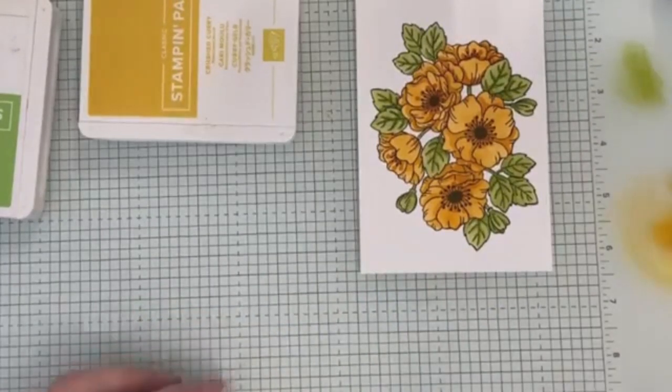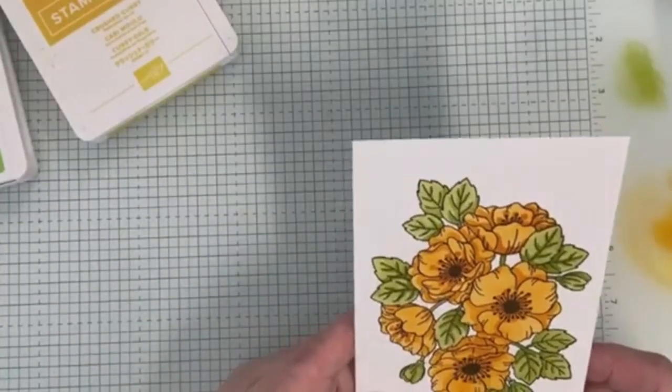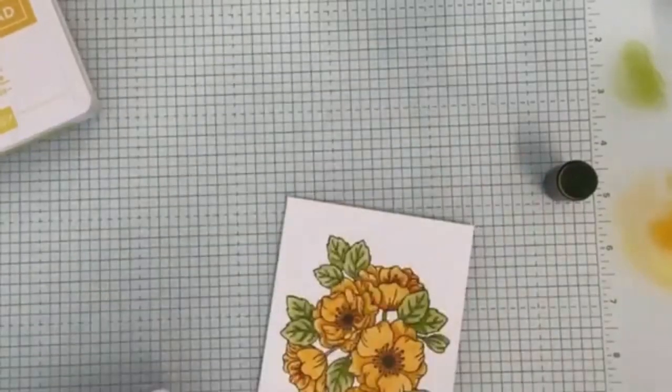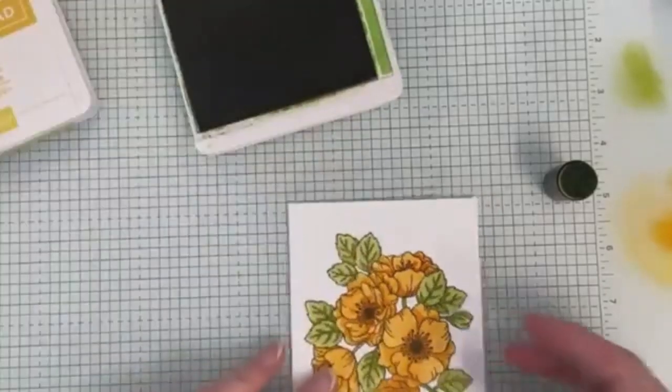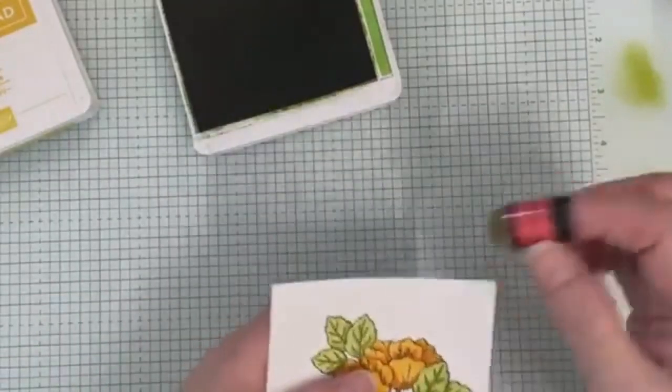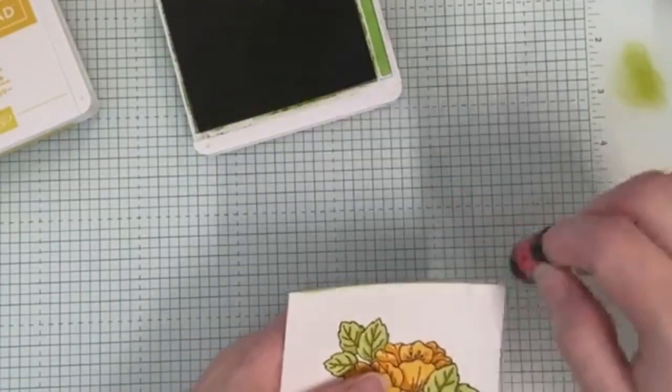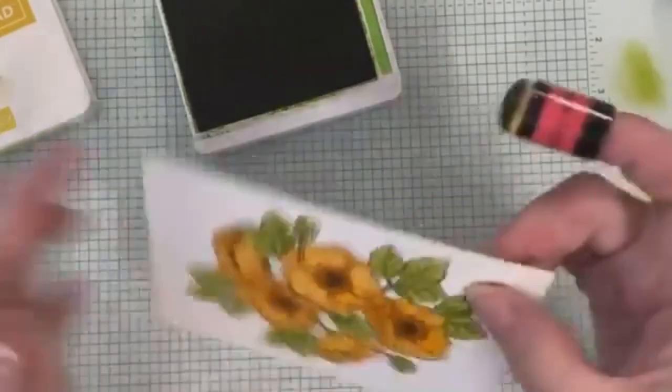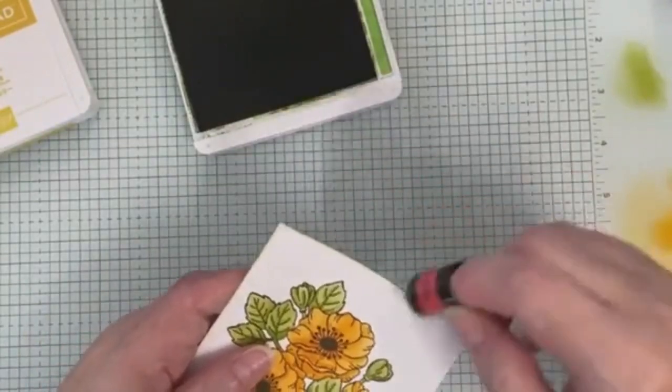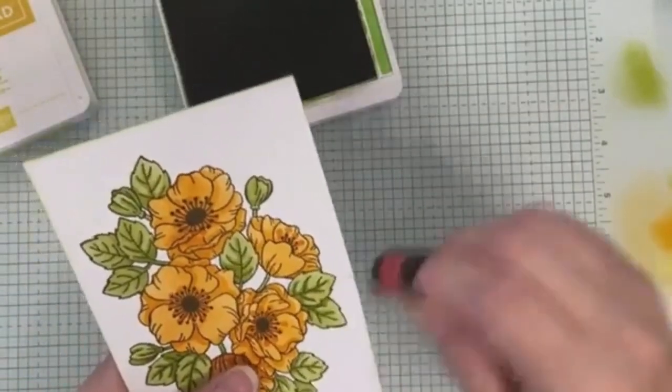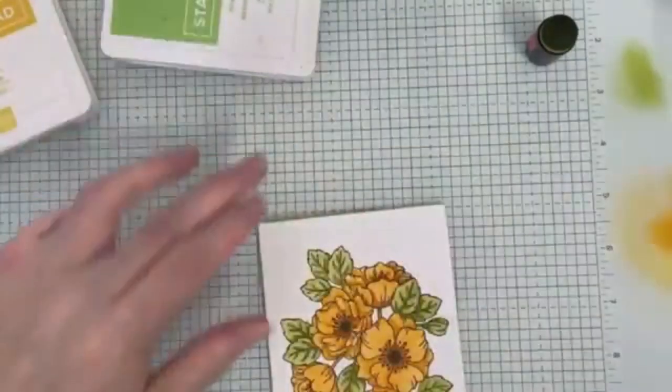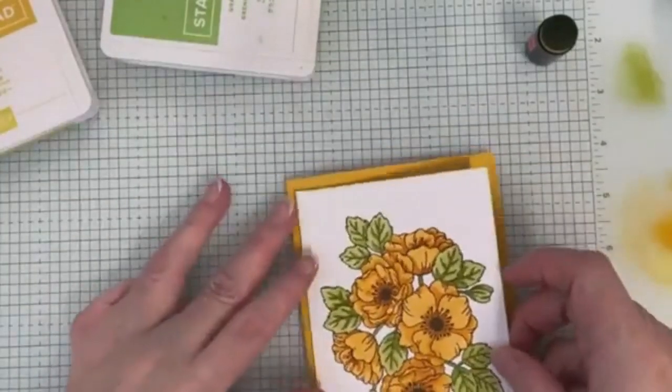So that is ready to go onto my card base. What I'm going to do is just sponge the edges with a dauber. I quite often do that. I could use the Crushed Curry, but I might just use the Granny Apple Green. I'm just doing very light sponging on the edge to finish that panel.